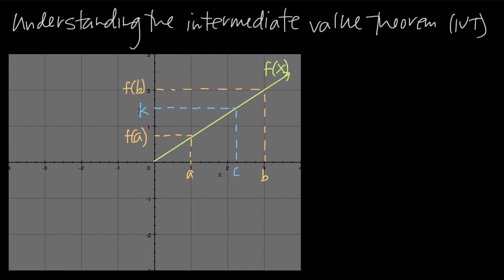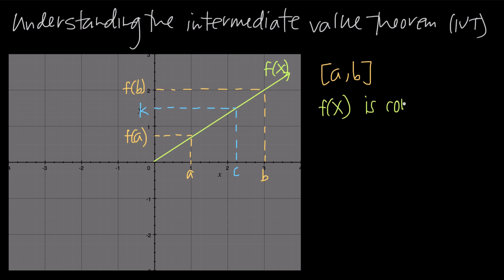Let's start with a couple of things that this theorem assumes. We have the x-interval a to b — the left-hand side of the interval is a, the right-hand side is b — so we have this closed interval a to b, and the interval has to be closed. The Intermediate Value Theorem also assumes that f of x, which we've graphed here in green as a linear function, is continuous on the interval a to b.